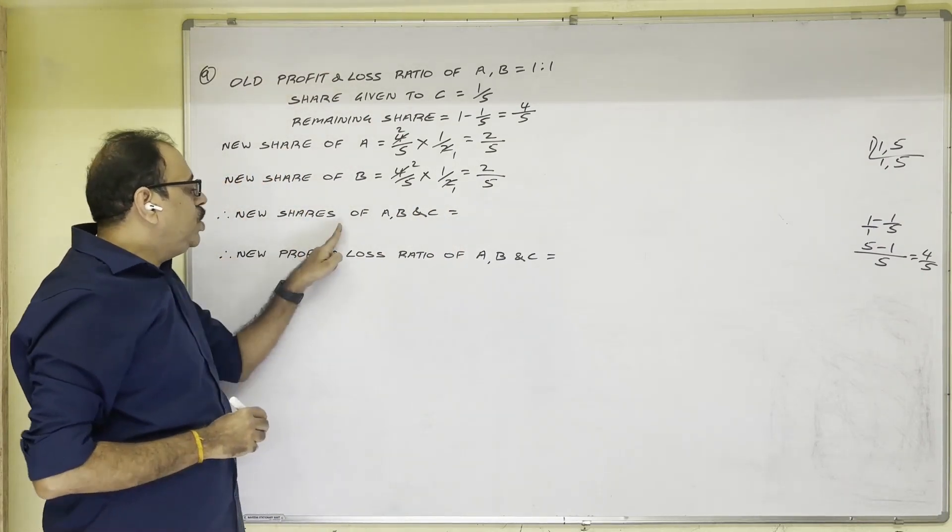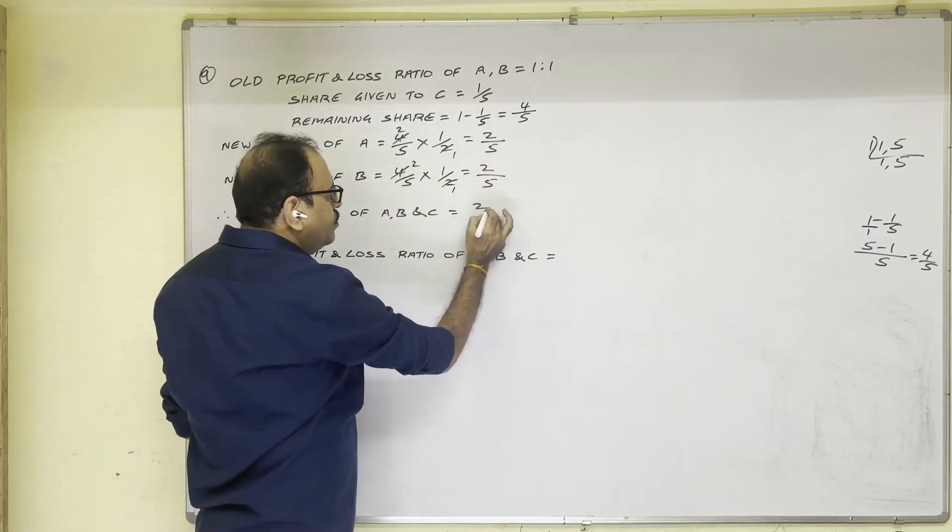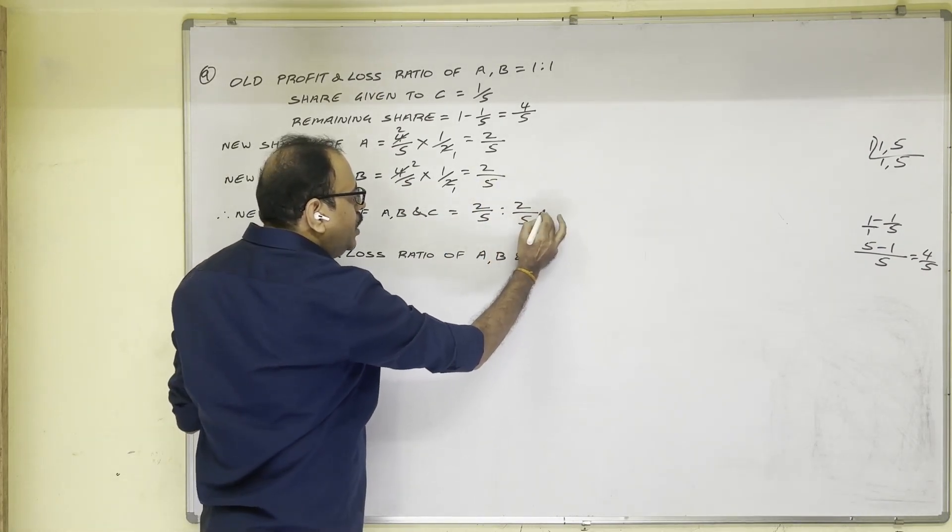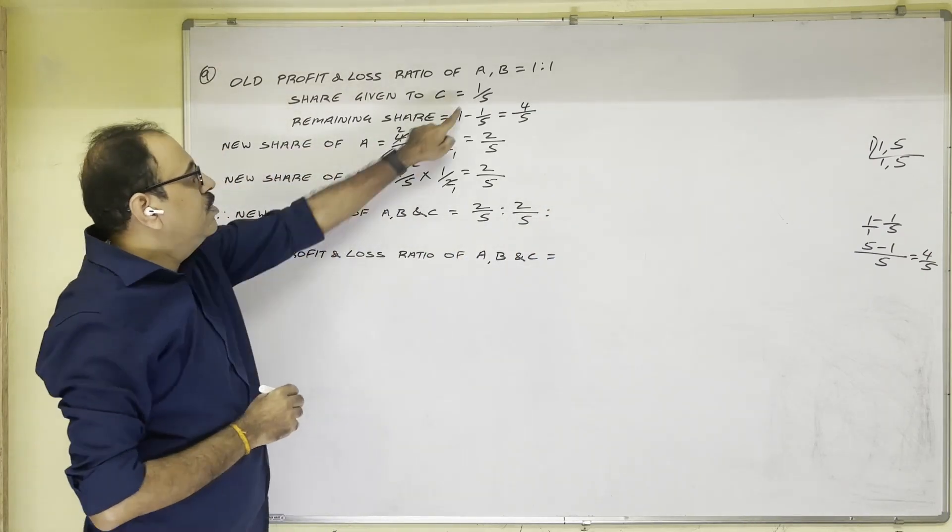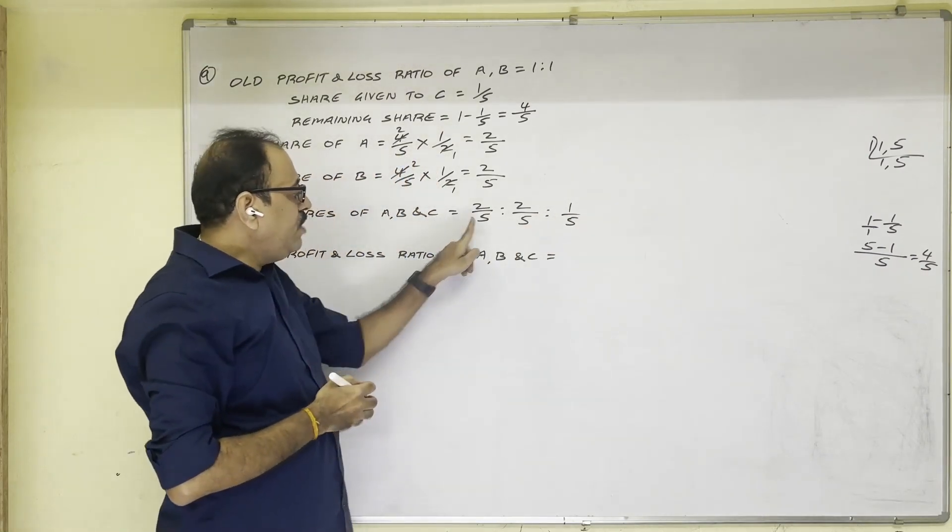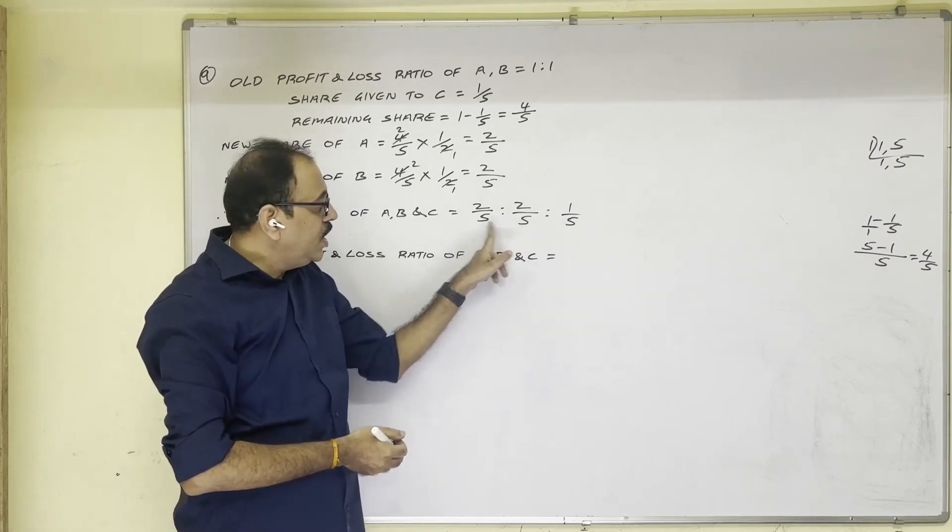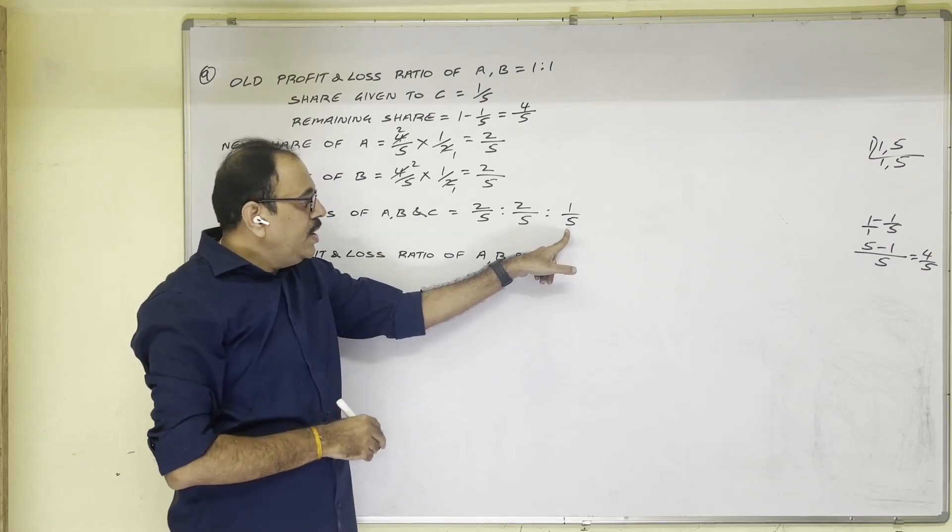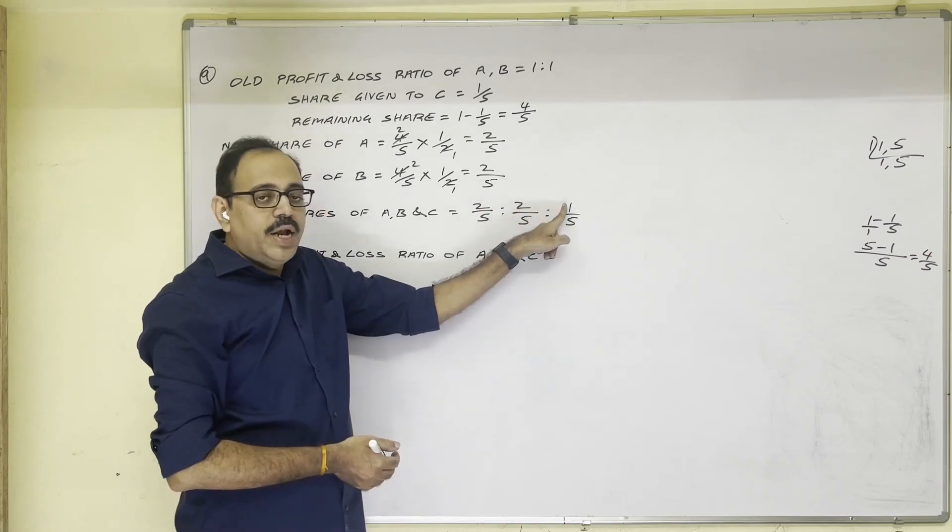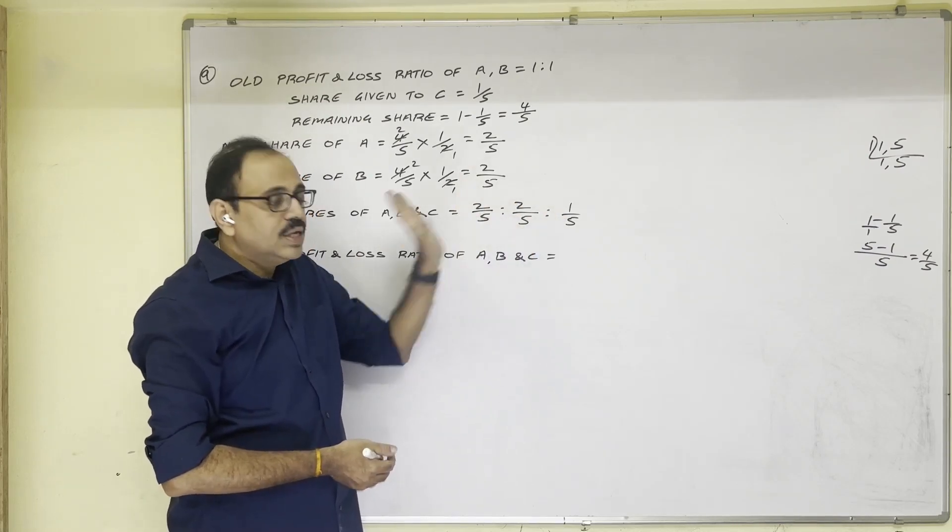So all these new shares we write in one place. A's new share is 2/5, B's new share is same 2/5, and C's new share is given in the question only 1/5. So when you write fractions in ratio form rule is all denominators should be same. Here denominators are same okay and how to know whether this answer is correct or not. If you add these 3 numerators denominator should come. 2 plus 2 plus 1 equals 5, denominator is coming. So this answer is correct.